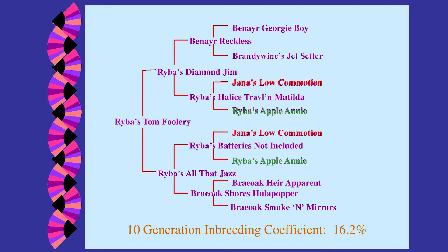The first dog is Rebus Tomfoolery, call name Cisco, born April 1st, 2001 — an April fool's dog. He had 35 offspring in the database. When looking at a pedigree, I take colored marking pens and highlight any dog that appears more than once — that tells me the type of mating going on. In this three-generation pedigree: Johnny's Locomotion appears as a great-grandsire on both the sire and dam side. Rebus Appalani also shows up as a great-grand-dam on both sides.